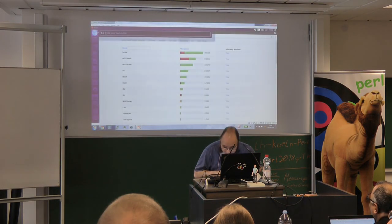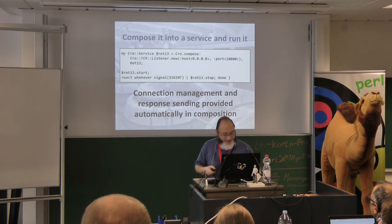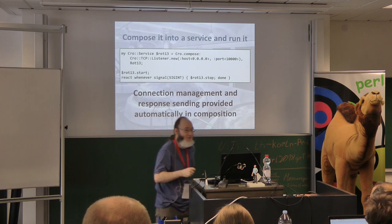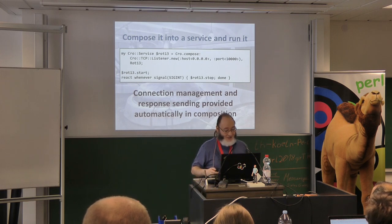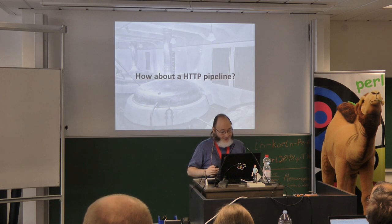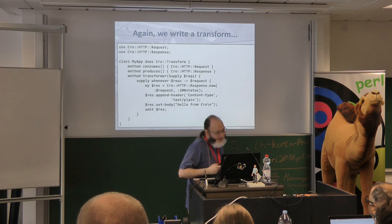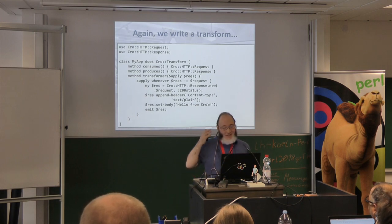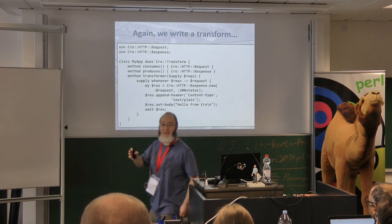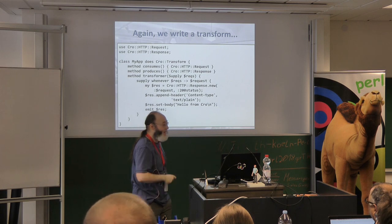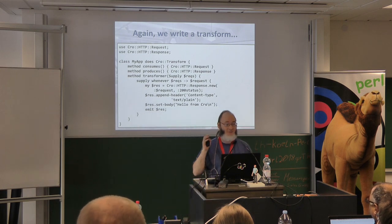Connection handling, connection management, and sending the response are all handled automatically. So that's a TCP service. How about an HTTP one? Let's build an HTTP service — and this is the plumbing level of Crow; we'll get to the high-level porcelain later. This is a transform that consumes an HTTP request and produces an HTTP response.